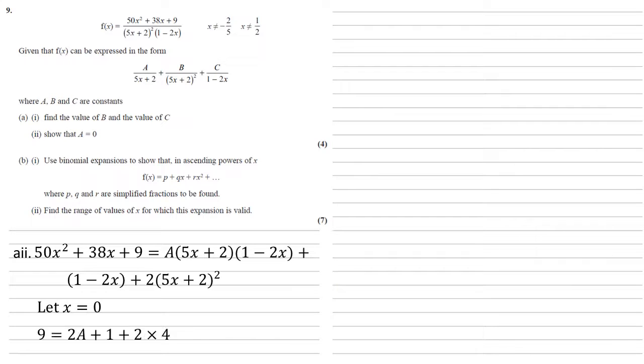So letting x equal 0, we get 9 on the left hand side. The right hand side we just get 2 times 1 from the brackets, so 2a plus 1 plus 2 times 4, so 9 equals 2a plus 9, hence a is equal to 0 as required.